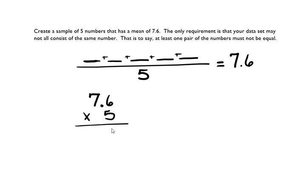Five times six is 30. Five times seven is 35, plus three is 38. One decimal place. So I have 38. Now if I want my mean, my average, to be 7.6, I have to find some combination of numbers that will add up to 38, so when I divide by five I get 7.6.